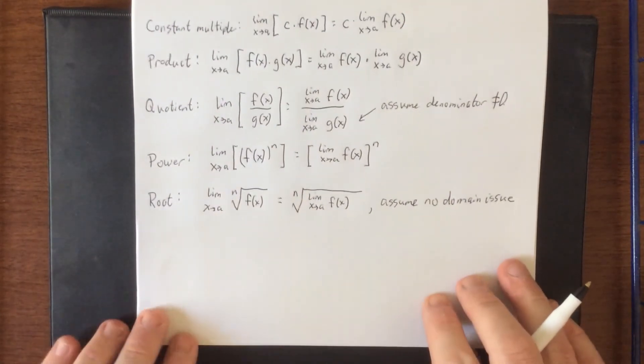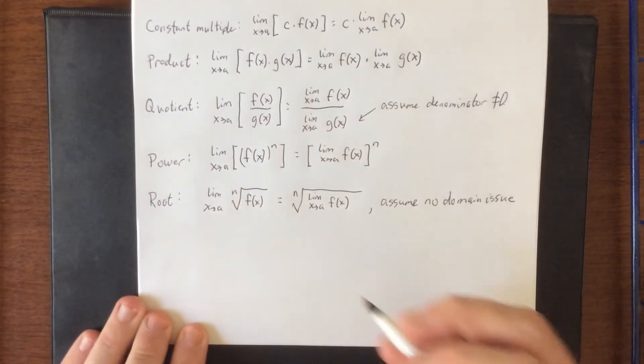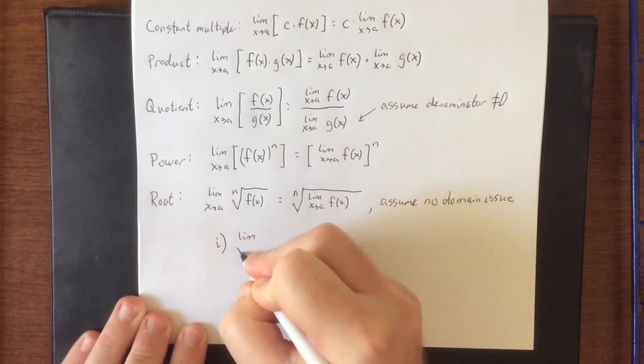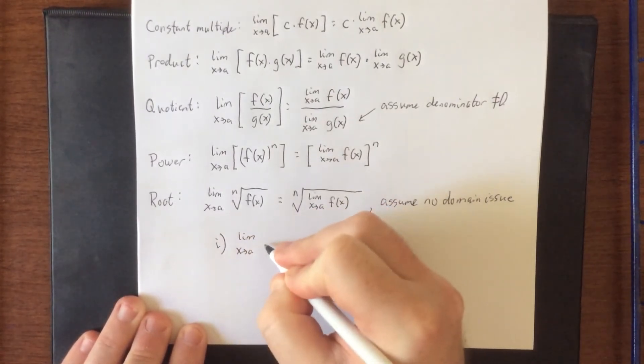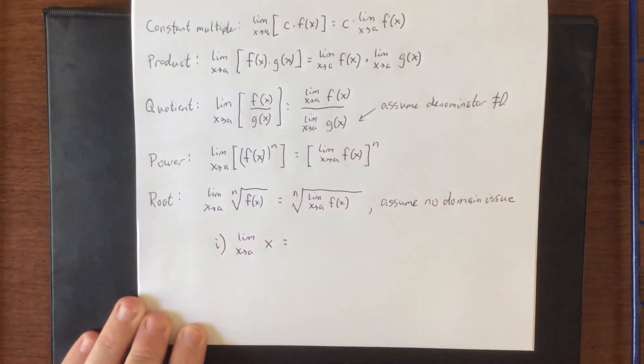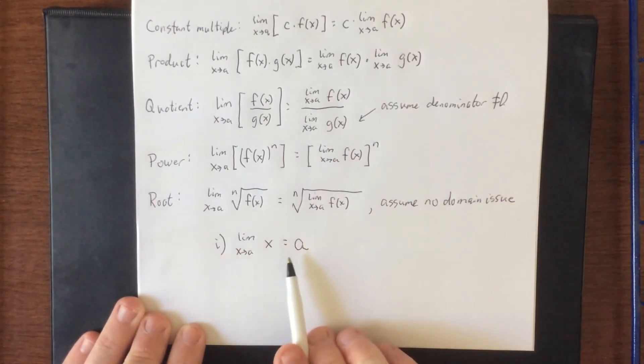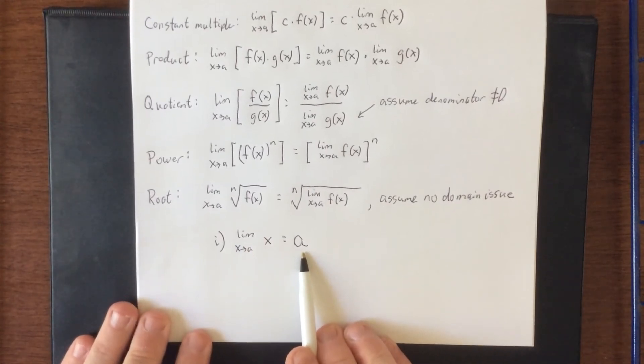There are two evaluation laws that we can make use of. The two evaluation laws say that if you take the limit as x approaches a of x, according to the intuitive definition, we're saying as x approaches a, what does x approach? Well, I just answered that question. It approaches a. This is something that you can use to actually evaluate a limit and turn it into a numerical value.